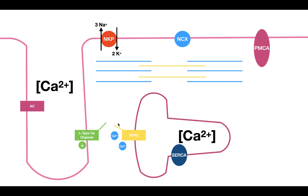From the combined actions of calcium entering through the L-type channel and calcium released via the ryanodine receptors, you get a large increase in cytosolic calcium. This increased calcium level interacts with the contractile fibrils — the actin and myosin — and initiates contraction. We'll discuss the mechanism of that contraction in a later video. So contraction occurs when you increase the calcium level inside the muscle cells.